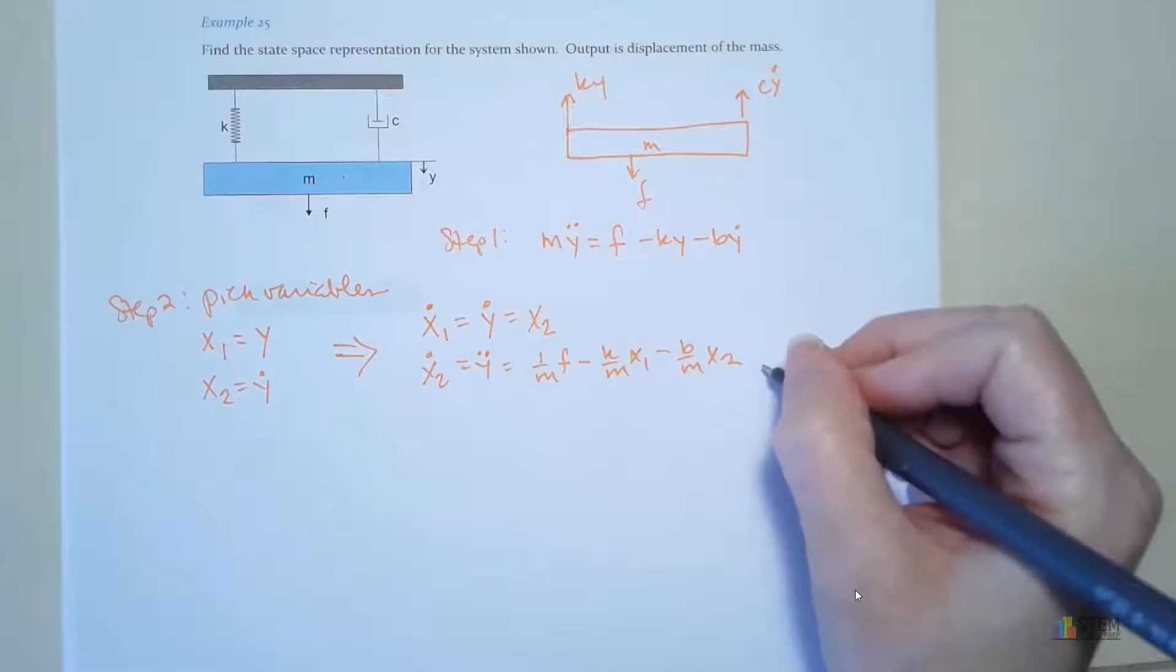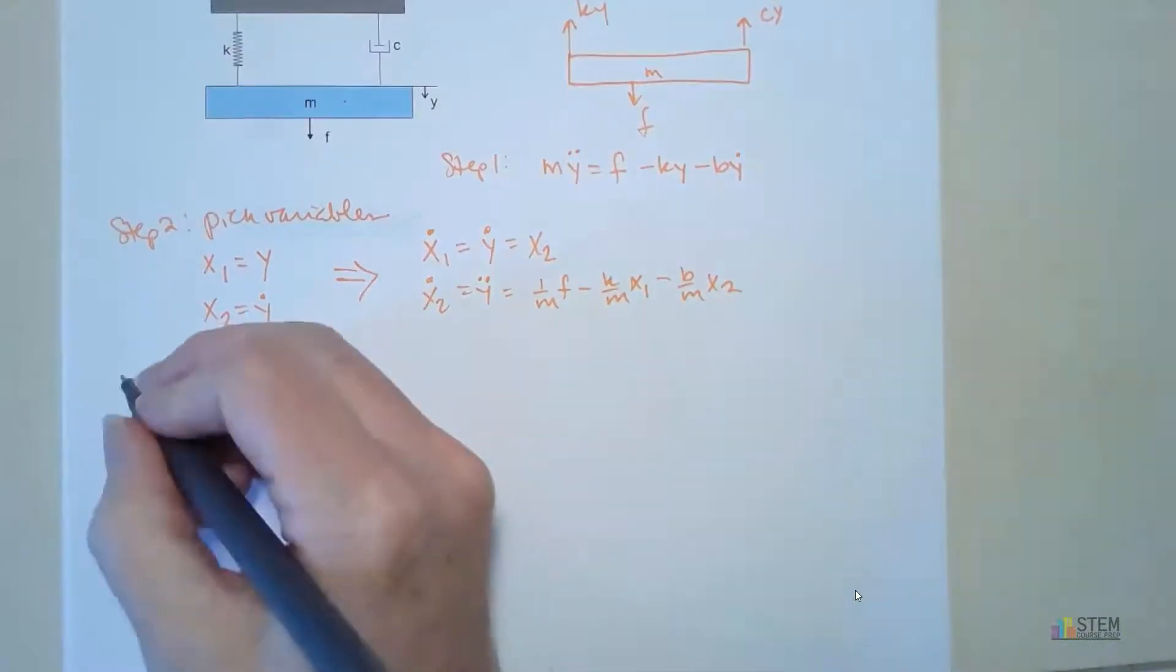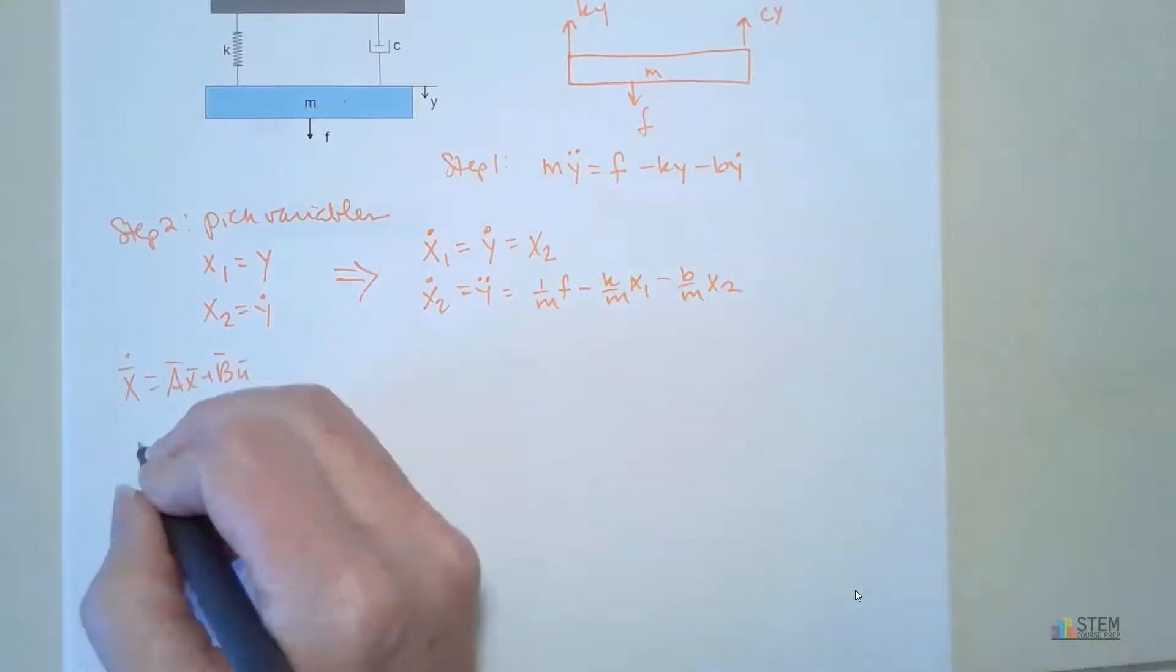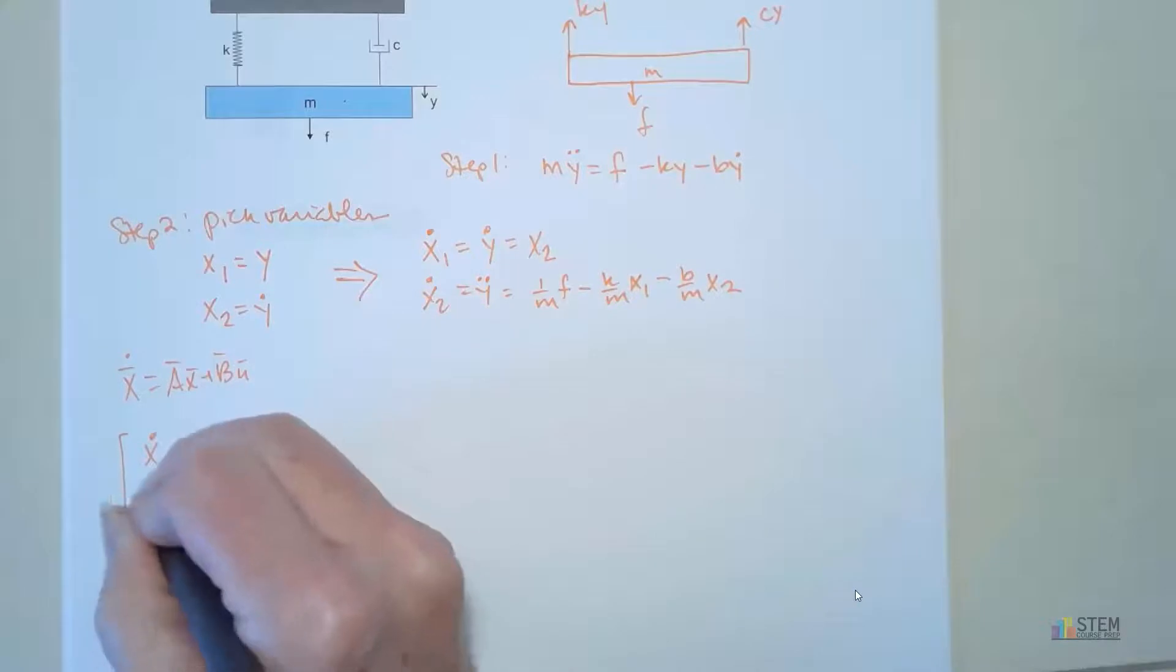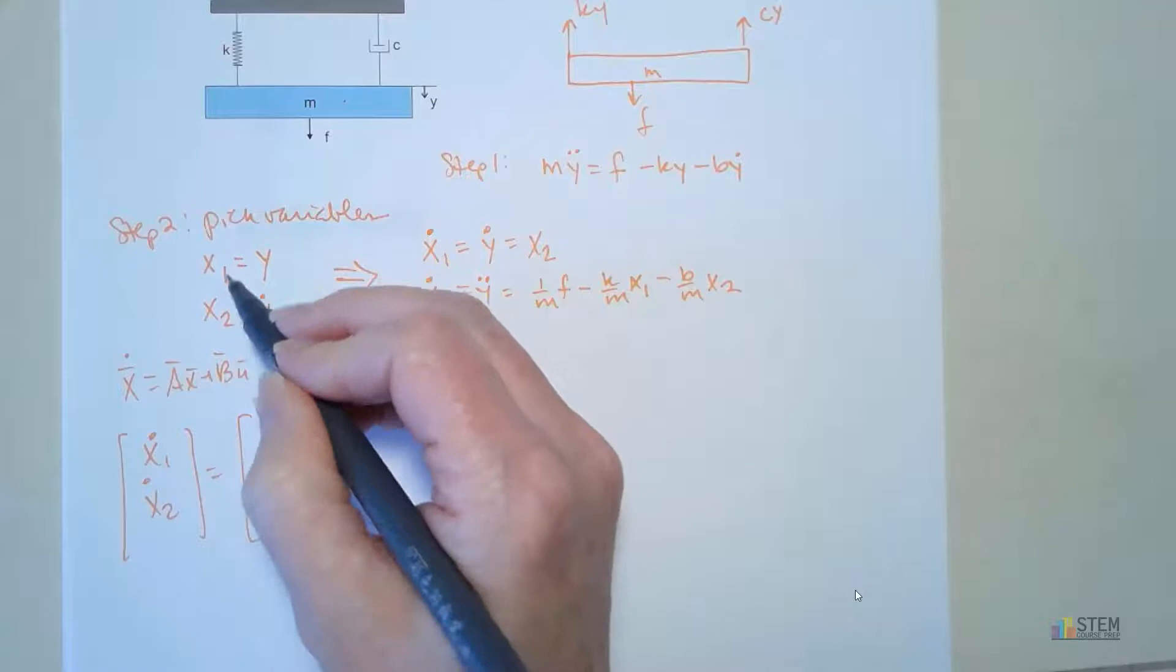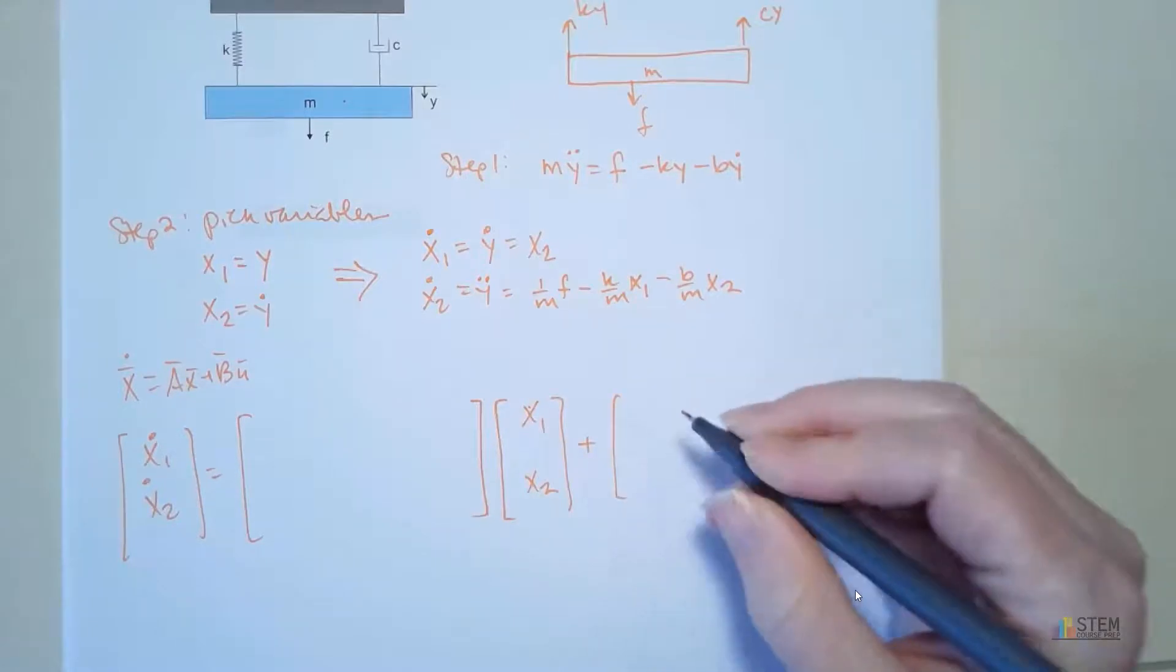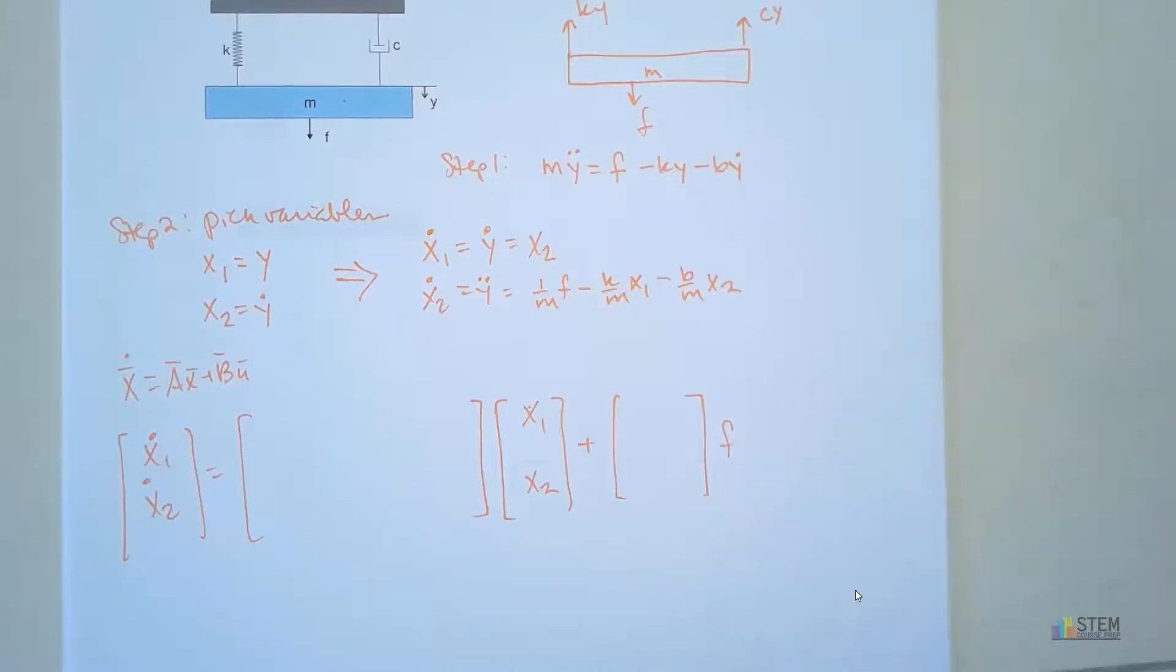Now that we're done with this, that was the hard part. Now we're ready to go ahead and put it in matrix form. Remember, it's x dot equals ax plus bu. So this left hand side is going to be right here: x1 dot, x2 dot. That's going to equal our matrix A times x, where that's the state vector - the state vector is right here, x1 and x2 - plus a matrix B times the input. Our input here is just f, so you can just put f right there.